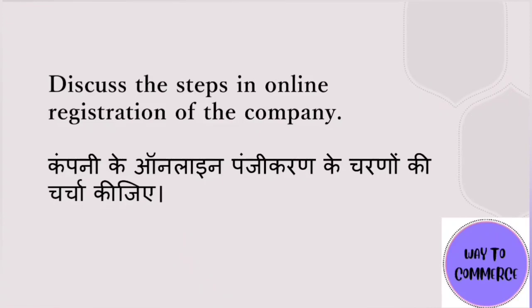The next question: discuss the steps in online registration of a company. First, log in on the MCA website. Then make a registration form. Then make a digital signature for all subscribers. Then prepare eMOA and eAOA — fill form number INC-33 and INC-34. The requirements to attach with the form include copy of PAN, address proof, and ID proof. These are all the steps.